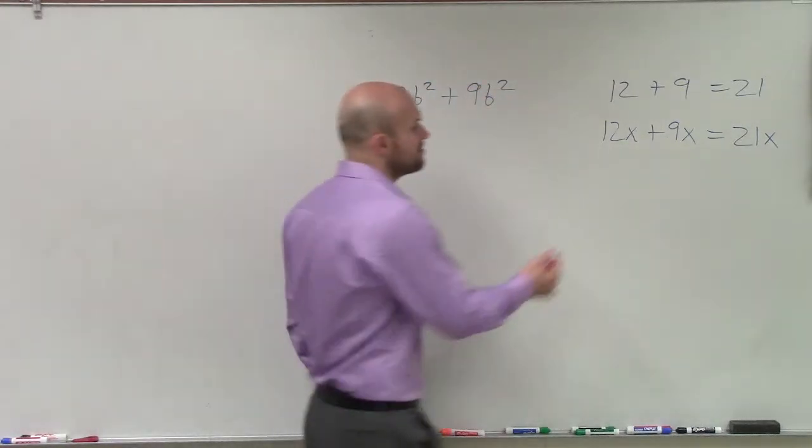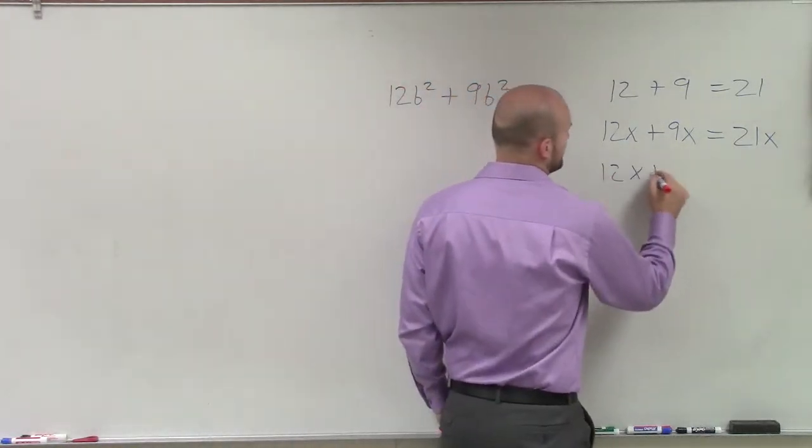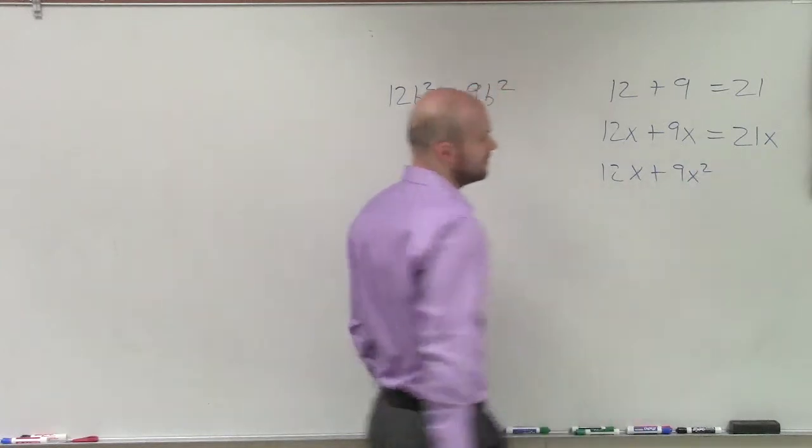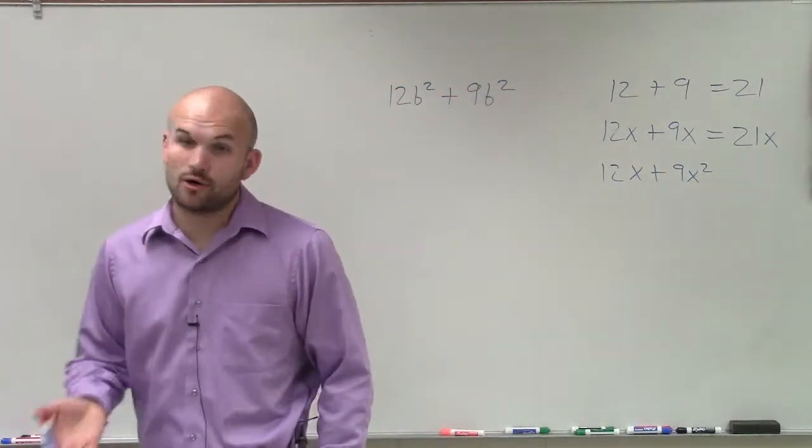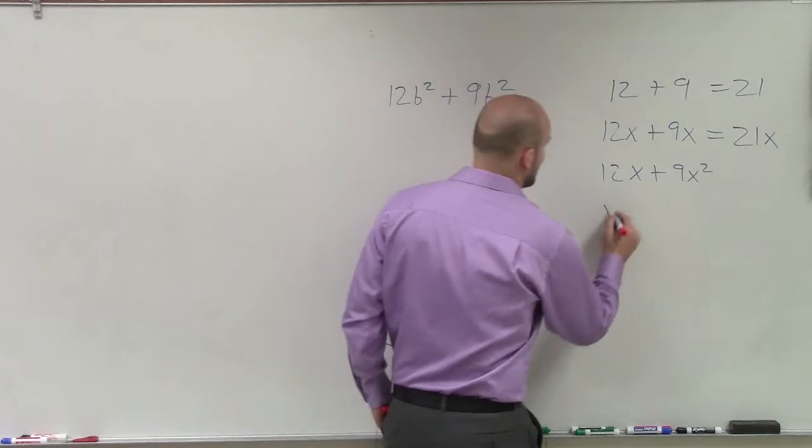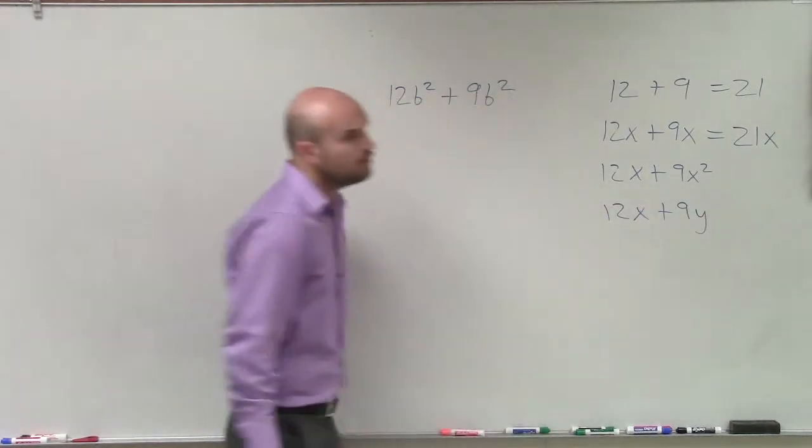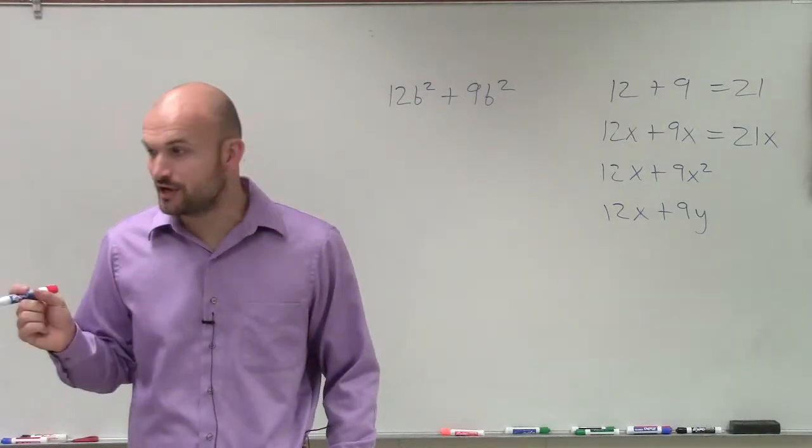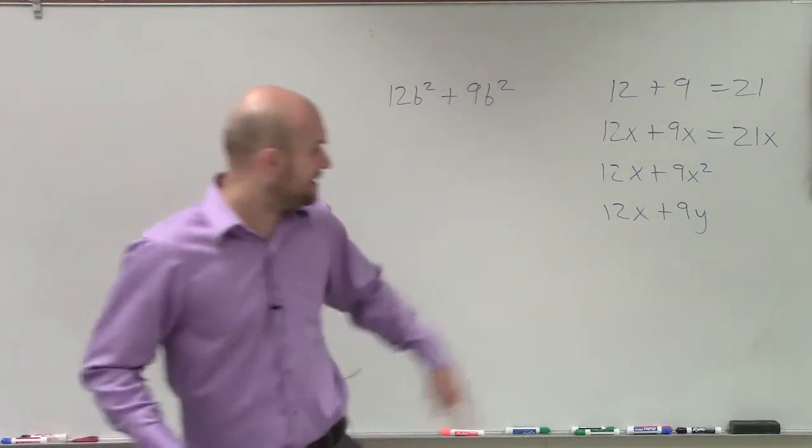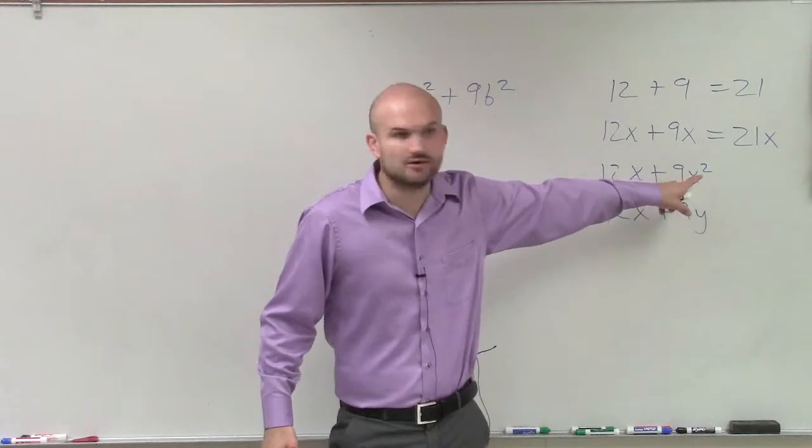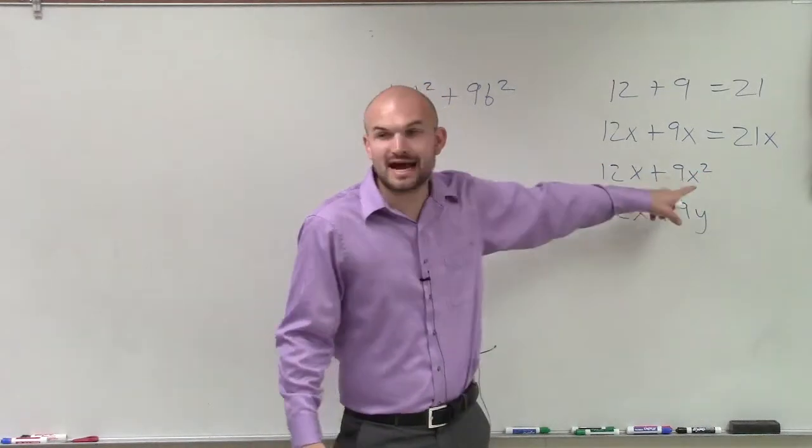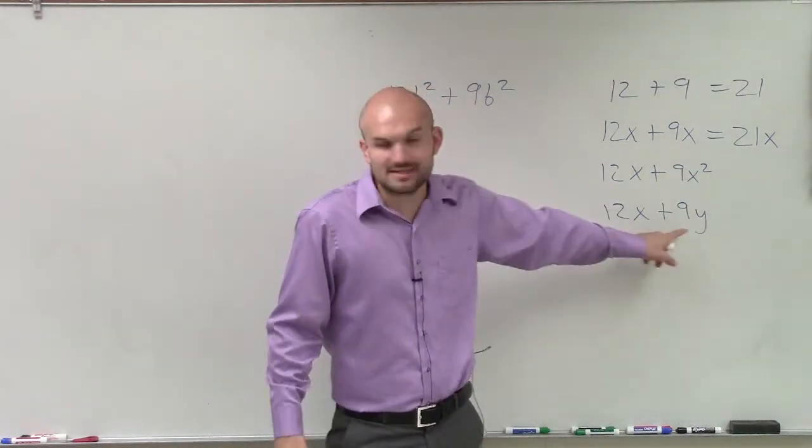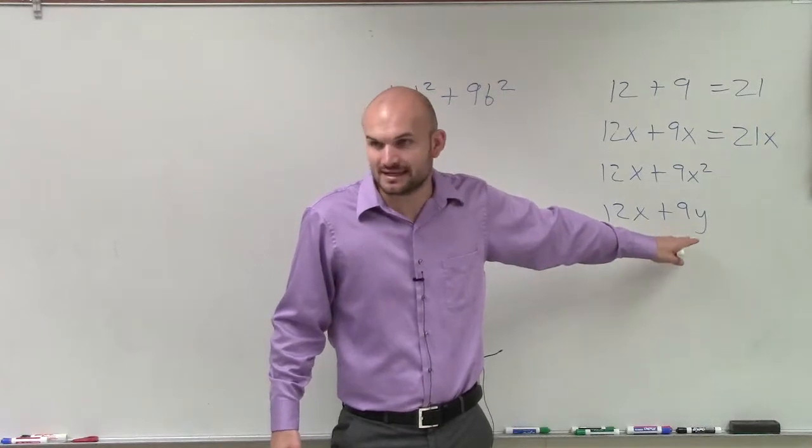However, there's going to be a problem with what if I did 12x plus 9x squared. What you guys should have remembered, or even if I did 12x plus 9y. What we notice is, if they don't have the same variables, or what we call variable factors, you can't combine them. Here's an x and an x squared. Those are not the same, so I cannot combine these. Here's an x and here's a y. I cannot combine these.